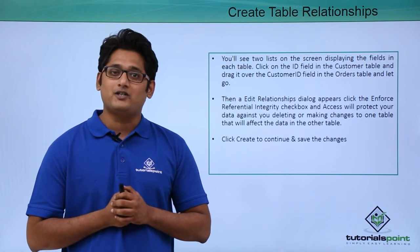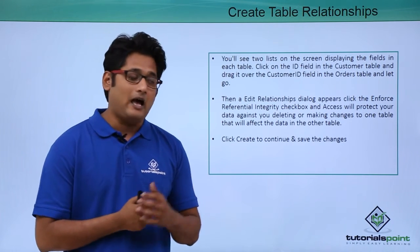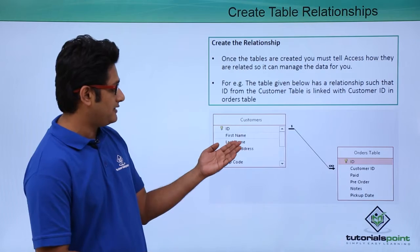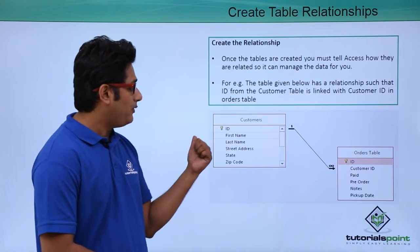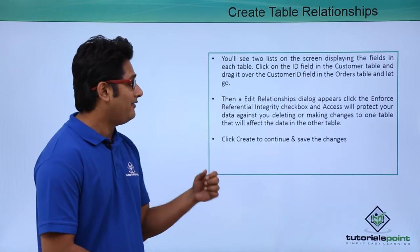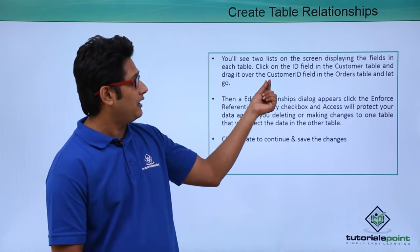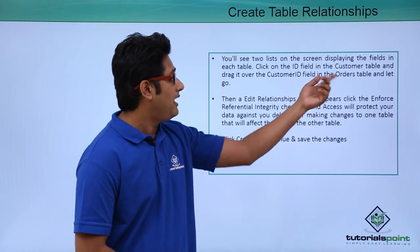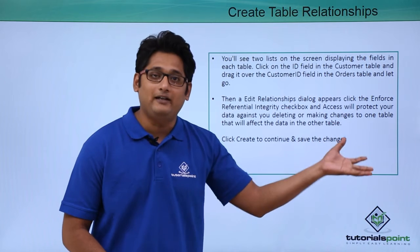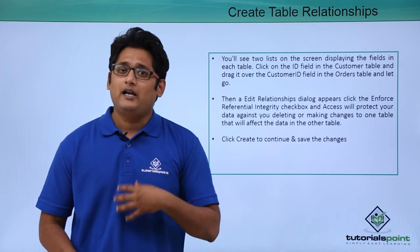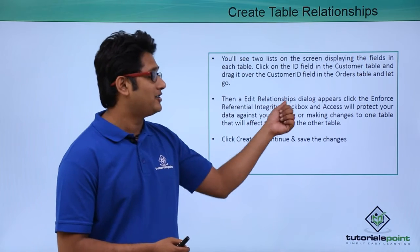The moment you click on the Relationship button, it is basically showing you two tables. With these two tables ready, I will pick them and simply interconnect them. I will click on the ID field from the customer table and drag it over the customer ID field in the orders table and release it. The moment I release it, it will open up a new dialog box which will say Edit Relationship.